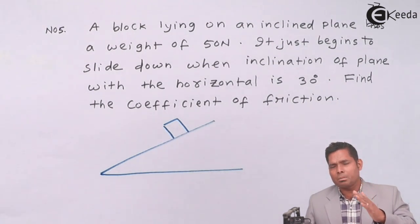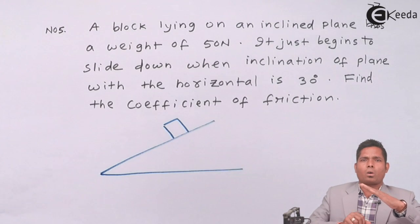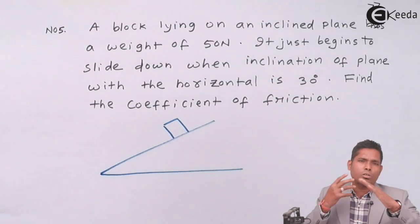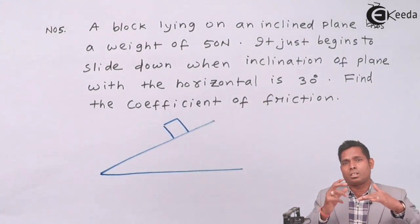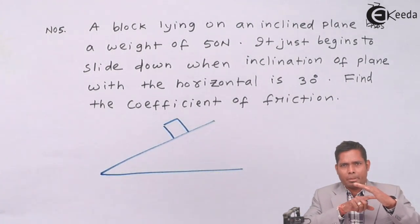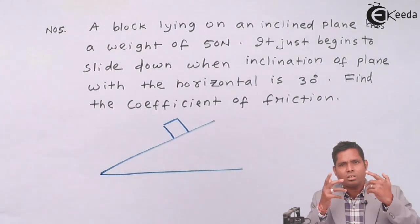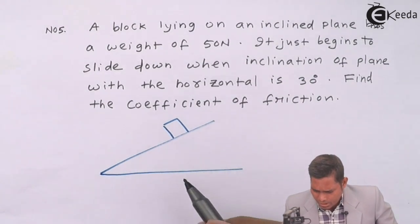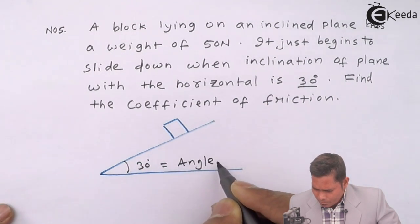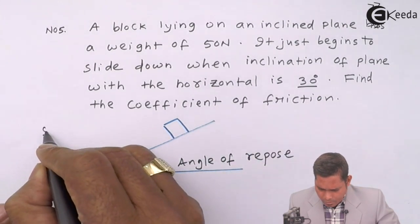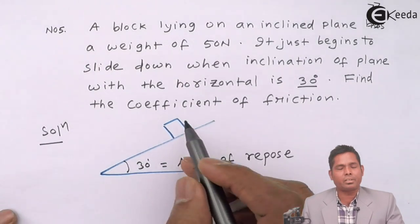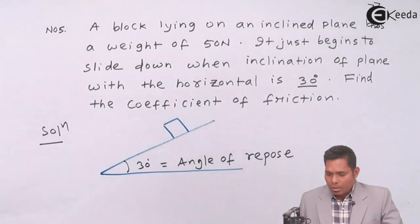The angle of repose is the minimum angle of the inclined plane at which a block placed on it starts sliding. Obviously, if it starts sliding at 37 degrees, then it will also slide at any angle greater than 37 degrees. If you decrease below that angle it will not slide. So this 30 degrees here is the angle of repose — at this angle it starts sliding; decreasing the angle it does not slide.